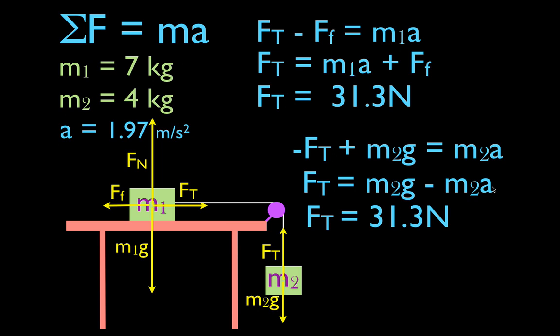That's all there is to it. We found the acceleration, paid attention to our negative and positive signs, took friction into account, and then found the tension. The tensions were the same for both objects, so we know we got it right. Thank you very much for watching. I hope you found that helpful. You can subscribe to my channel, give me a thumbs up, and leave a positive comment. We hope to see you in the next video.